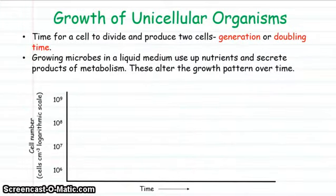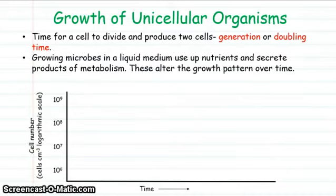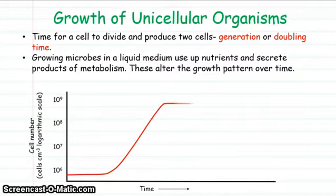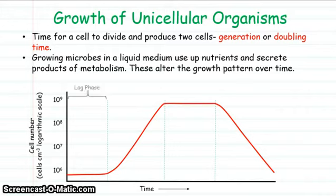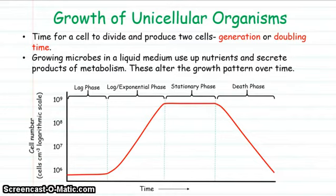Looking at the growth of unicellular organisms over time: the time taken for a cell to divide and produce two cells is called the generation or doubling time. Looking at the actual different rates of growth over time for microbes, such a curve can be split into different sections: first is the lag phase, then the log or exponential phase of growth, then comes the stationary phase, followed by the death phase.